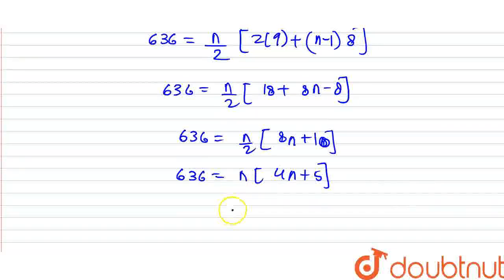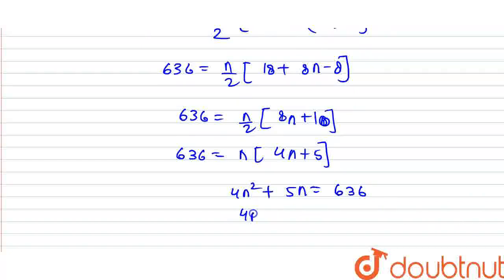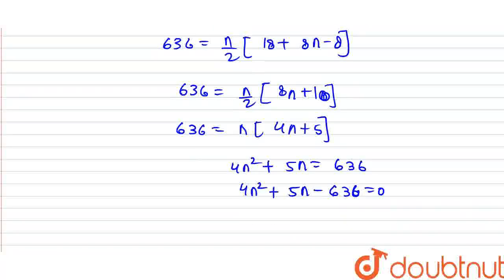Multiply now. Here we have 4n squared plus 5n equals 636. So, here we have quadratic equation. So here we have 4n squared plus 5n minus 636 equals 0. We have to solve by using quadratic formula.